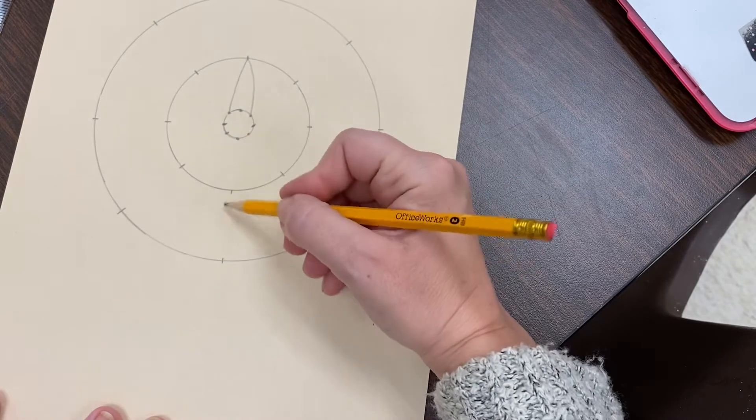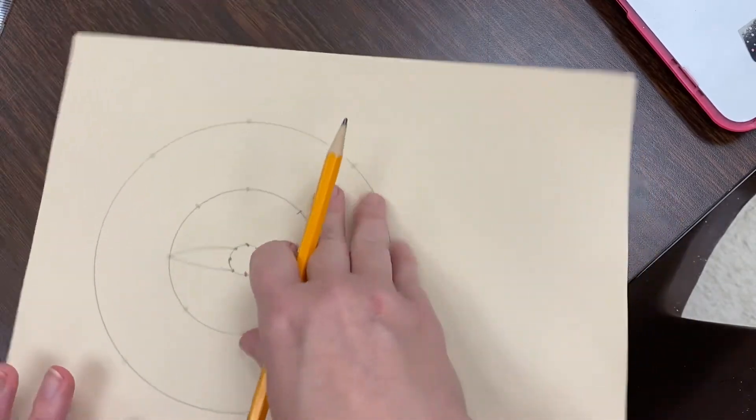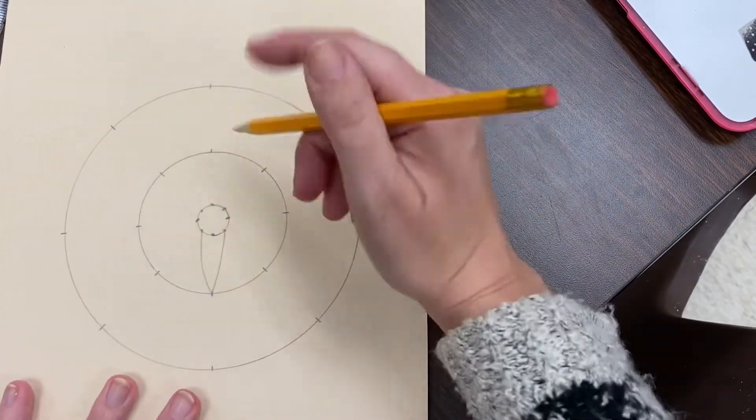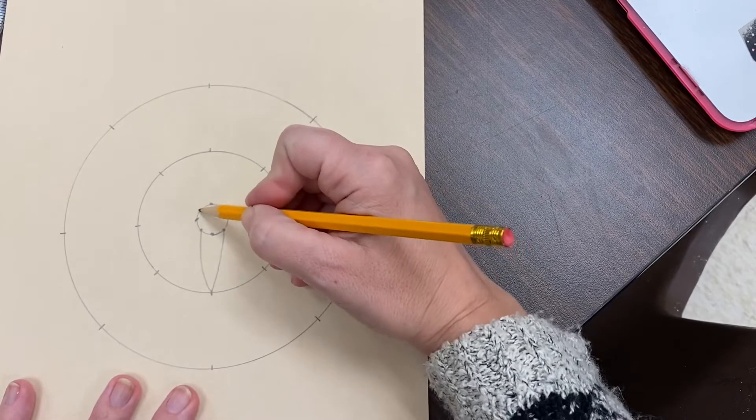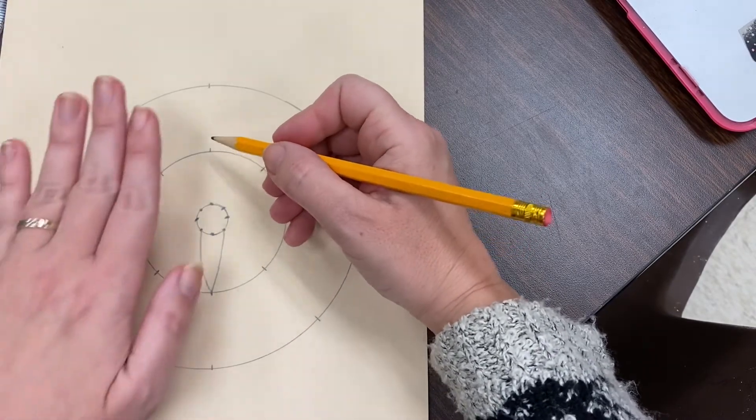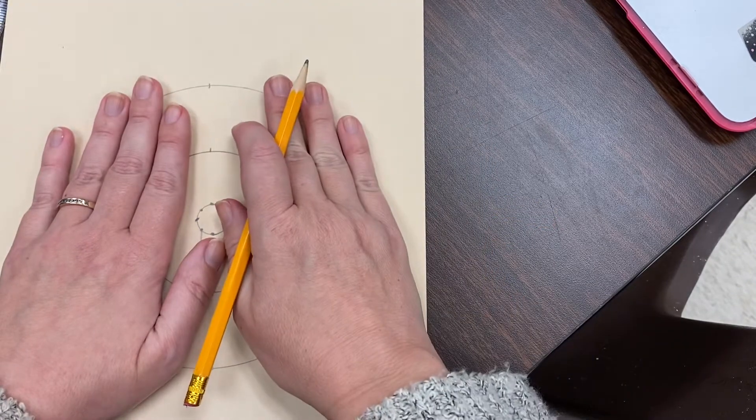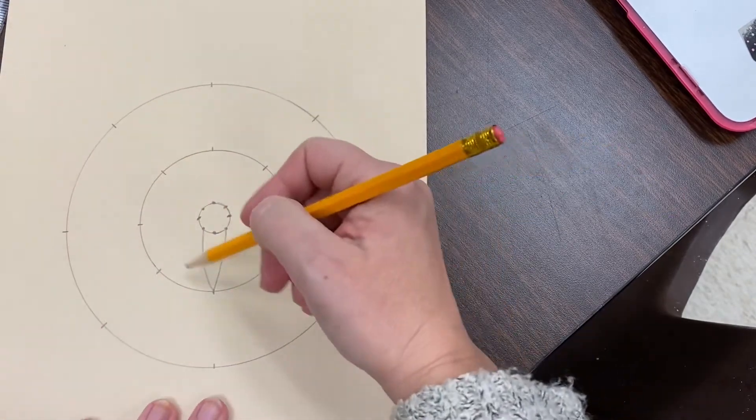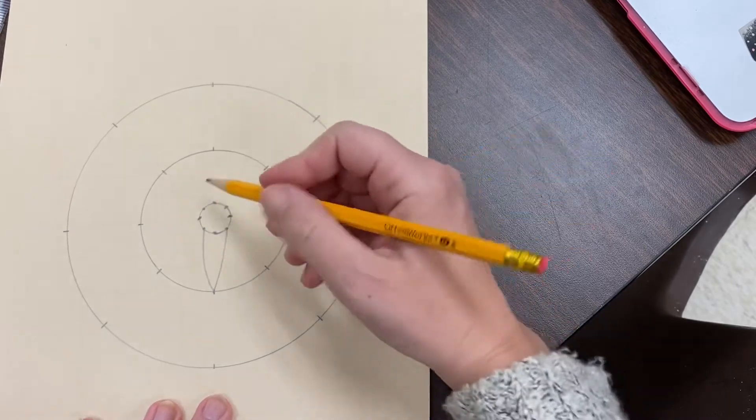And I want to do the same thing on the opposite side. This is called radial symmetry. We talked about symmetry before where we have everything looking the same on one side as the other. Now we're going to have symmetry going around, radial symmetry.